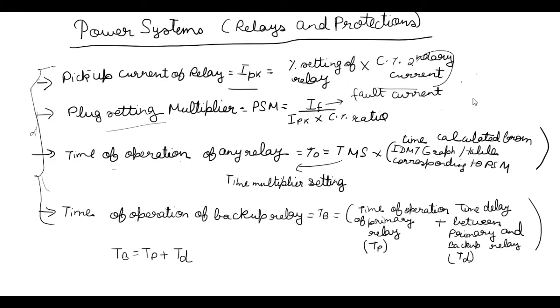Then time of operation of any relay is equal to T0, which is equal to TMS, which is time multiplier setting, into time calculated from IDMT graph or table corresponding to PSM. Now what is this? This was very difficult for me to understand, but we will see everything in the question. Now time of operation of backup relay, TB...